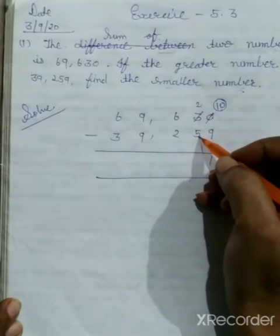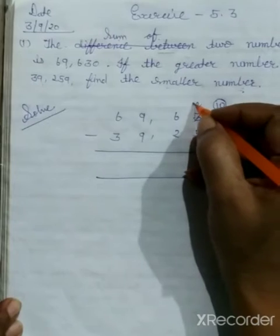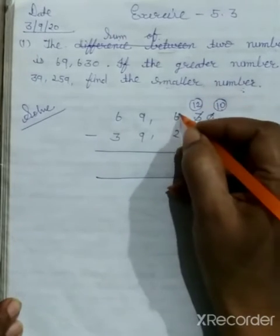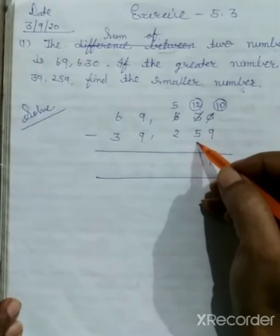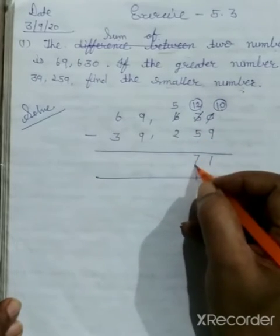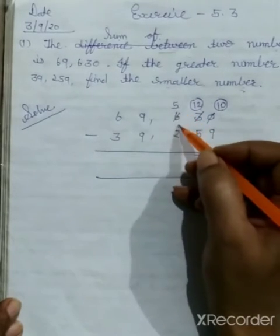Two minus five. We cannot subtract five from two. One, borrow. Twelve. This becomes five. Twelve minus five equals seven. Five minus two equals three.